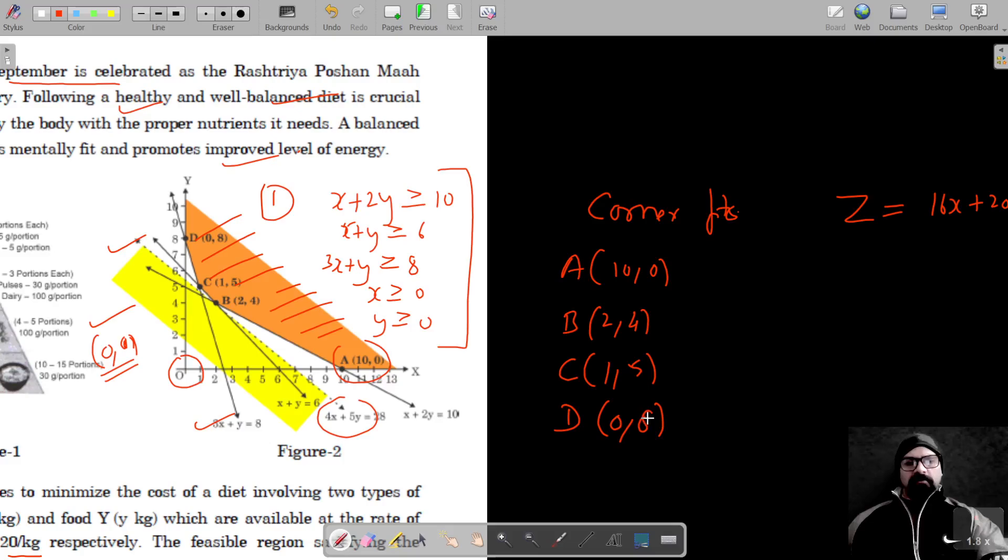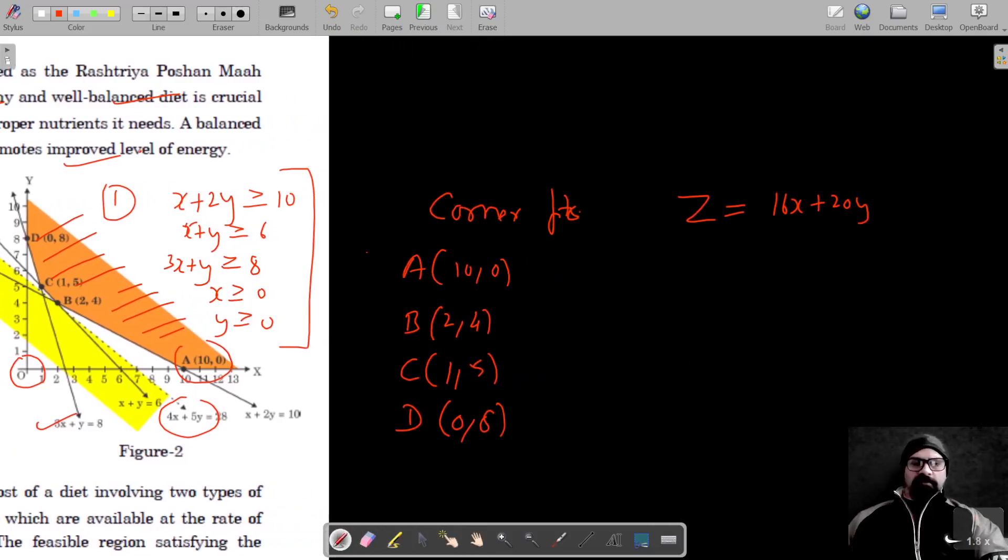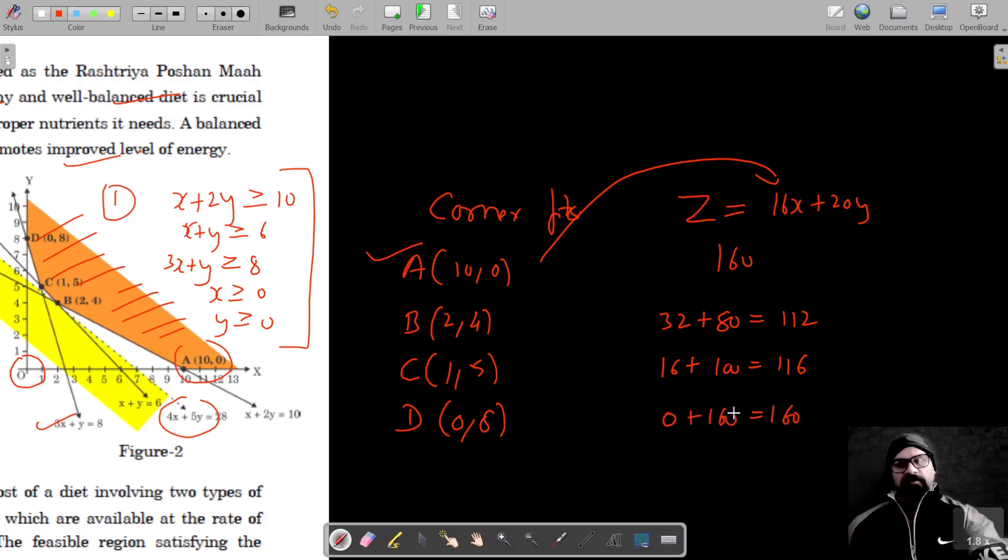Let's find out the value of Z for all these coordinates. For A, this is equal to 160. For B, 16 times 2 is 32 plus 20 times 4 is 80, which gives me 112. For C, this is 16 plus 20 times 5 is 100, which gives me 116. For D, this is 0 plus 160, which equals 160.